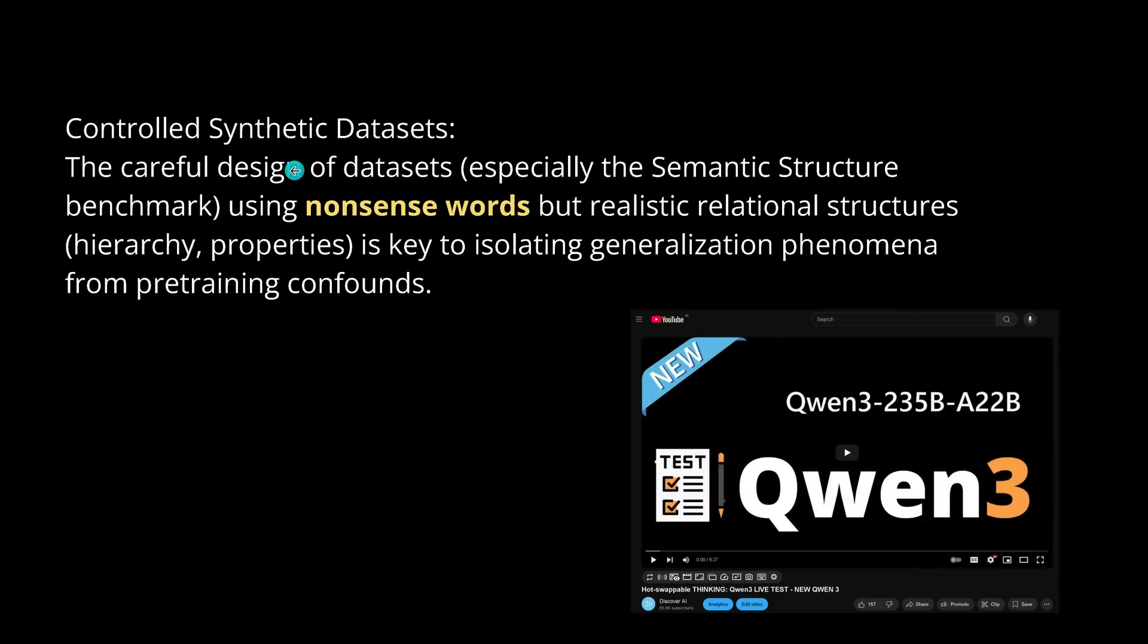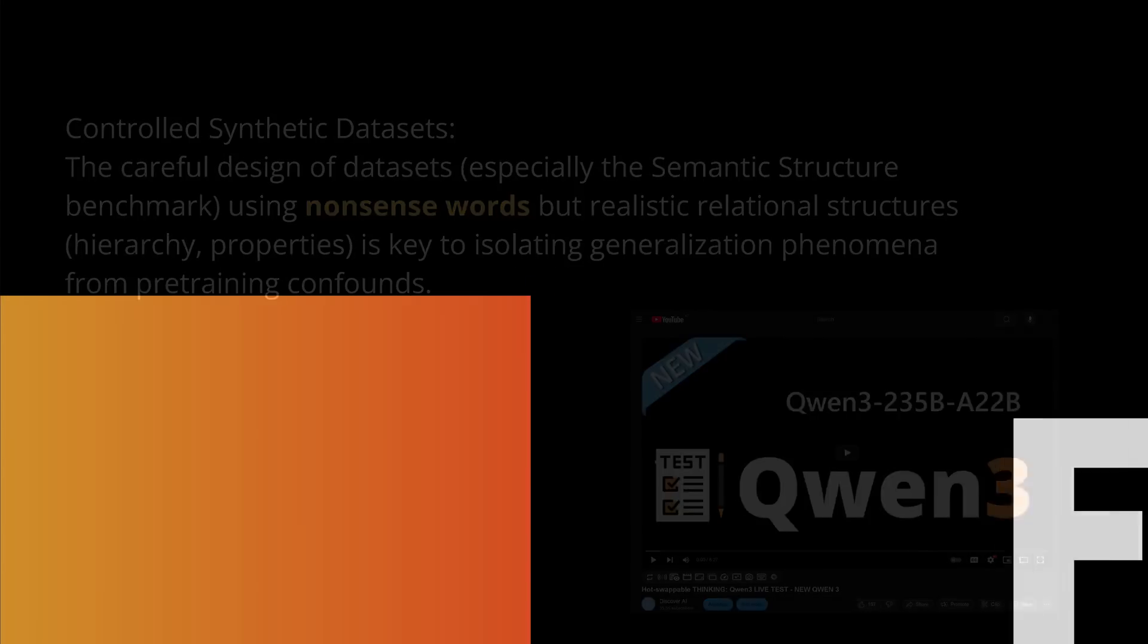So, what we have, we have now built control-synthetic data sets. And, as I told you, careful design this with nonsense words, but also with very relational structures. This is the key to isolating a generalization phenomena from the pre-training confounds. And, you know, if you ask me here on my test that I run here on the new LLMs like Qwen and why you have such a strange test and the names are just nonsense names. Now you understand what I've done now for one year. Now we have a beautiful publication by Google. And now Google is also using here the nonsense words. You see, there was value to it.